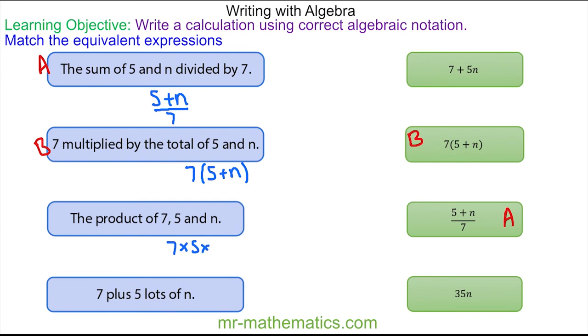Finally, 7 plus 5 lots of n. Well, 5 lots of n is 5n, and then we add the 7, so this one, as expected, matches with this one.